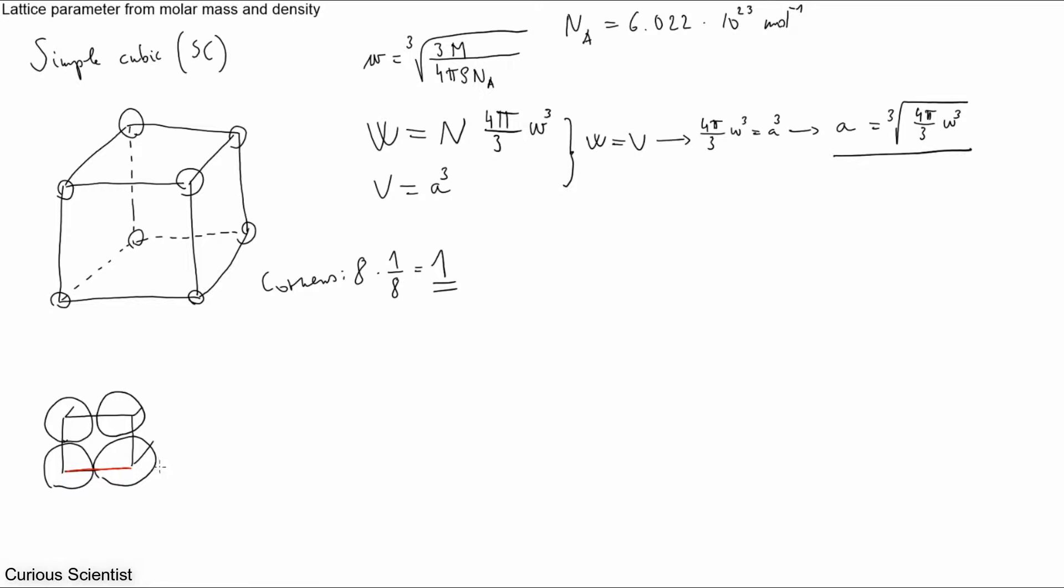And then this edge is the lattice parameter a. And then we can see that this a is basically one R and another R. So what we have here is we can say that the lattice parameter is two times R.